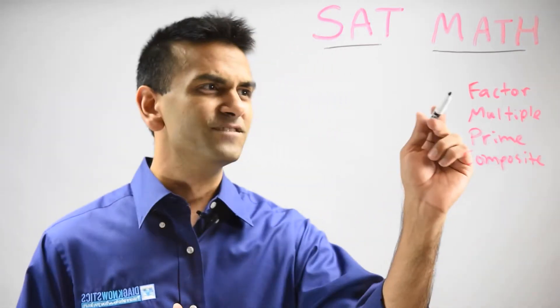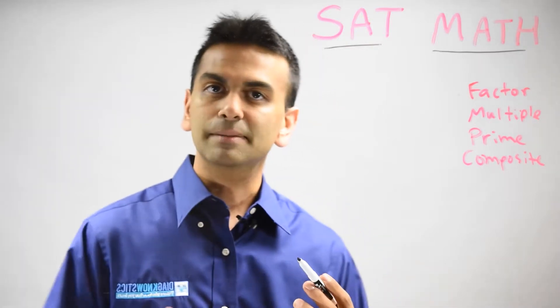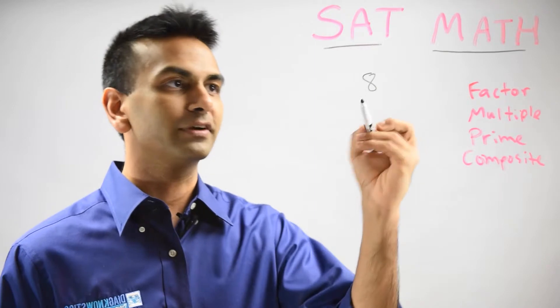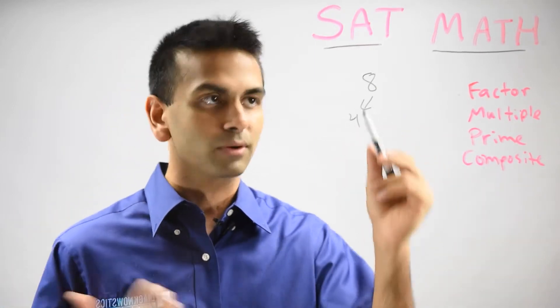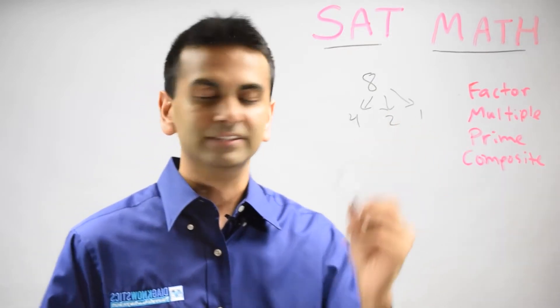Finally, some new vocab words here: factor, multiple, prime, composite. A factor is any number that divides it, that goes into another number. So if you have 8, for example, 4 is a factor of it because 4 times some other whole number is 8. 2 is a factor of it. 1 is a factor. So these are all factors.